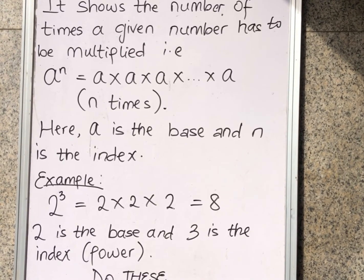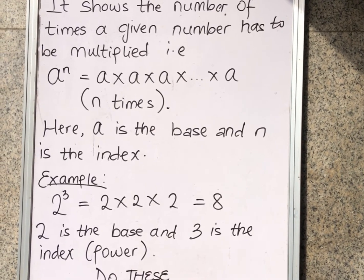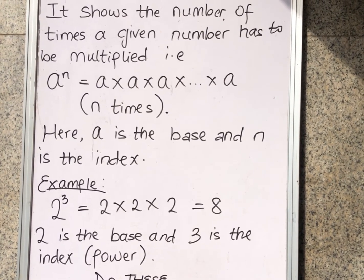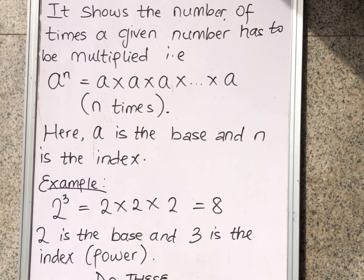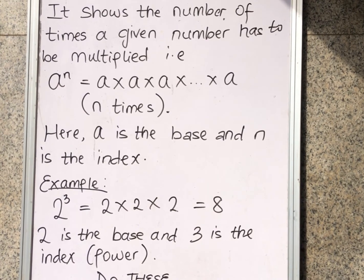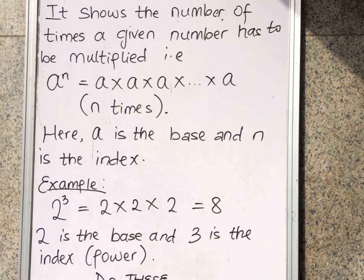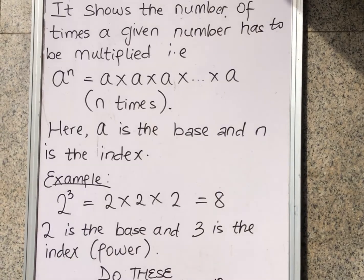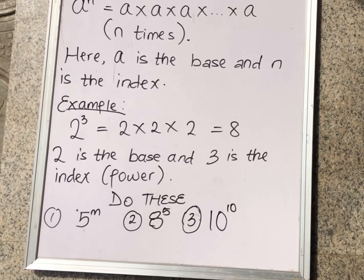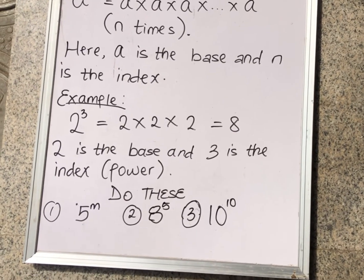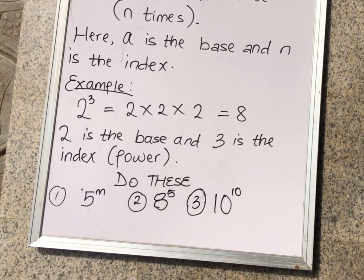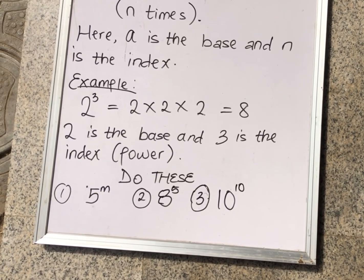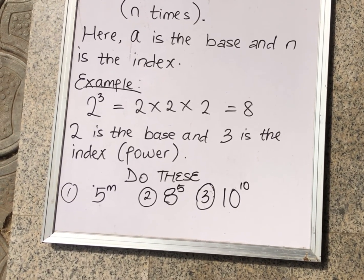Giving an example: 2 raised to the power of 3 — what does that mean? Like we said before, it means we multiply 2 three times. So 2 times 2 times 2 gives 8. In this case, 2 is the base and 3 is the power. Please do these examples and leave your answers in the comment section. Until next time. Bye.